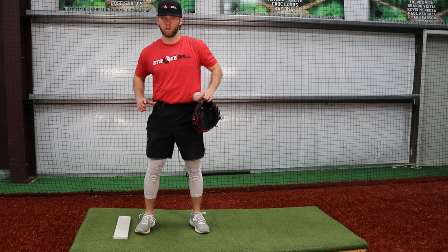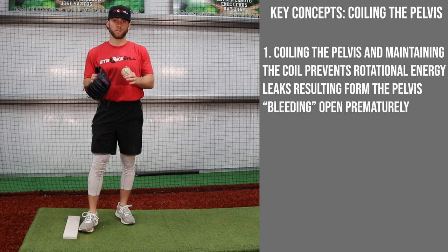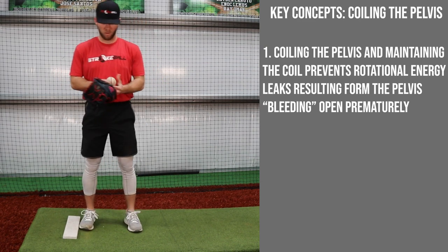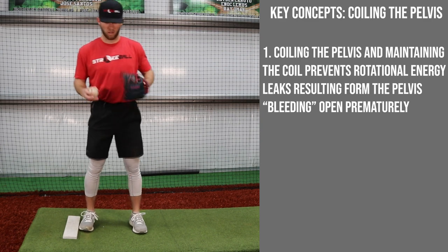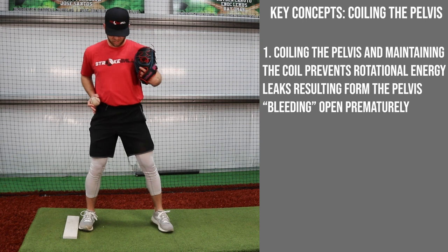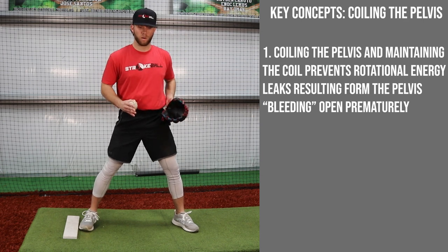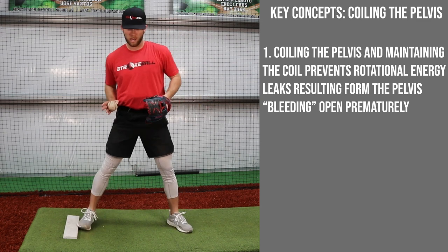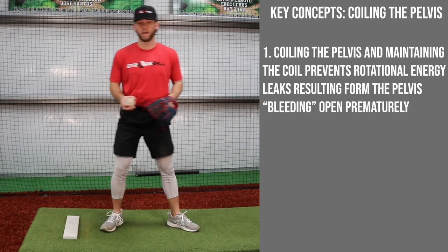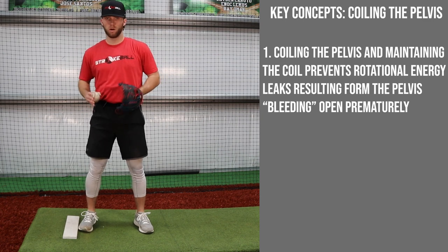A couple of reasons why getting the pelvis coiled over the back leg is important. Number one, the main reason we integrate pelvic coil is to prevent energy leaks where the pelvis is bleeding open as we're driving towards our target. Without maintaining pelvic coil, the pelvis starts to bleed open before we're even rotating, causing an energy leak. You lose the range with the pelvis to explode at front foot strike, ending up nearly open or neutral with only a little pelvic rotation. So we want to maximize the amount of pelvic rotation we can generate at front foot strike by integrating the pelvic coil over the back leg.